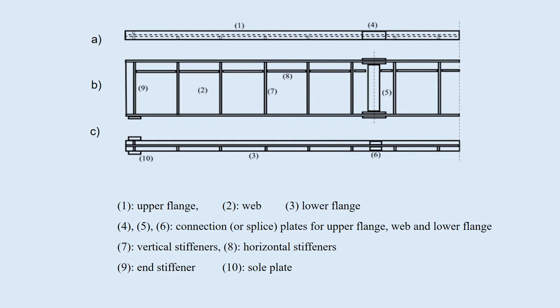The length and weight of a block depends on conditions and restrictions of construction sites. In a typical area in Japan, the limit is about 15 meters and 300 kN. The web is a relatively thin steel plate, which is likely to buckle. To prevent this, the vertical stiffeners 7 and horizontal stiffeners 8 are welded to the web. The girder is supported at the girder ends and reactions occur; they are resisted by the end stiffeners 9. The girder is supported by bearings, for which the sole plate 10 is welded to the lower flange.